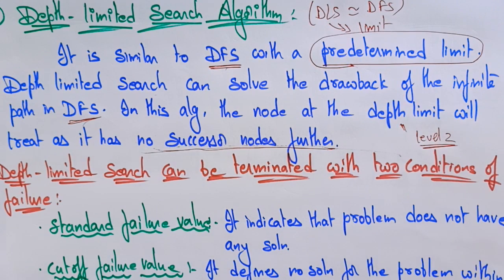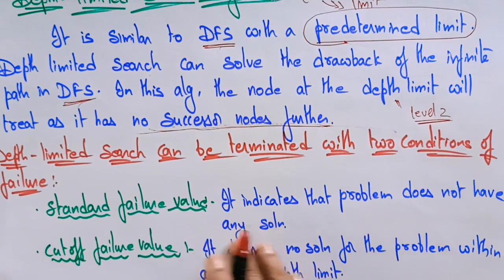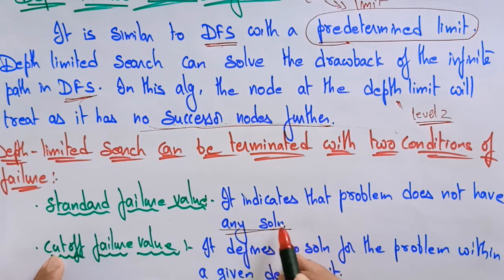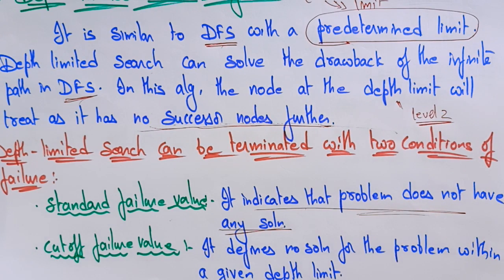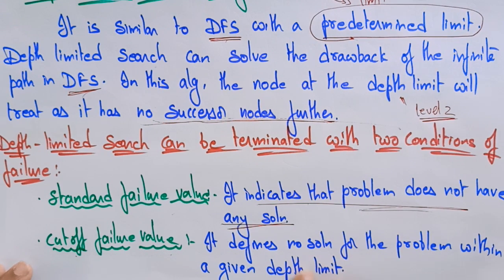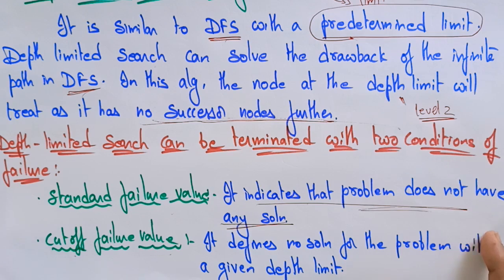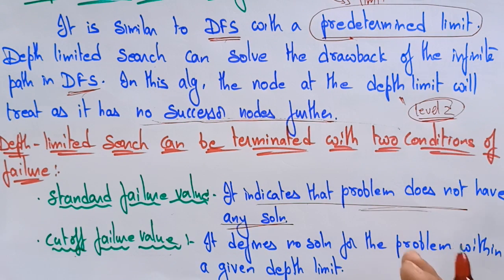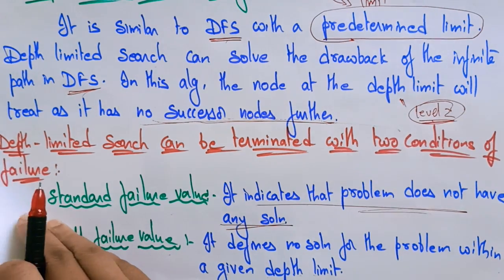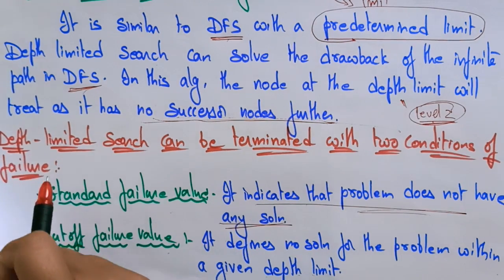The depth limited search can be terminated with two conditions of failure. First, the standard failure value, which indicates the problem does not have any solution at all. Second, the cutoff failure value, which defines that there is no solution for the problem within the given depth limit — meaning if you set level 2 as the limit and don't find the solution within it, that is a cutoff failure.